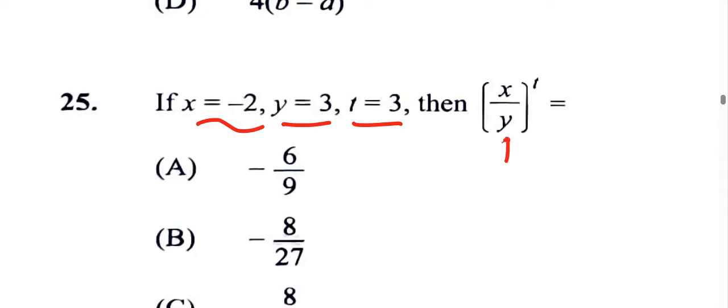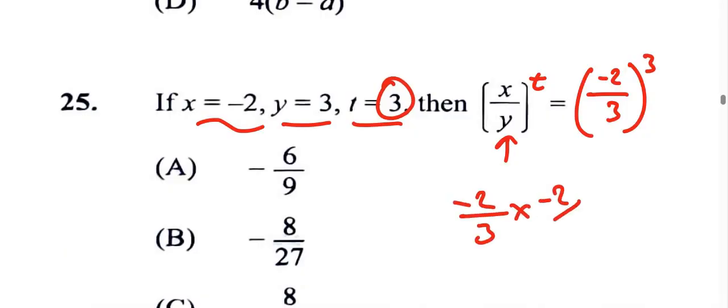I'm going to replace x with -2, replace y with 3. t is actually 3, so that goes as the exponent. So that's -2/3 times -2/3 times -2/3, cubed, multiplied by itself three times.